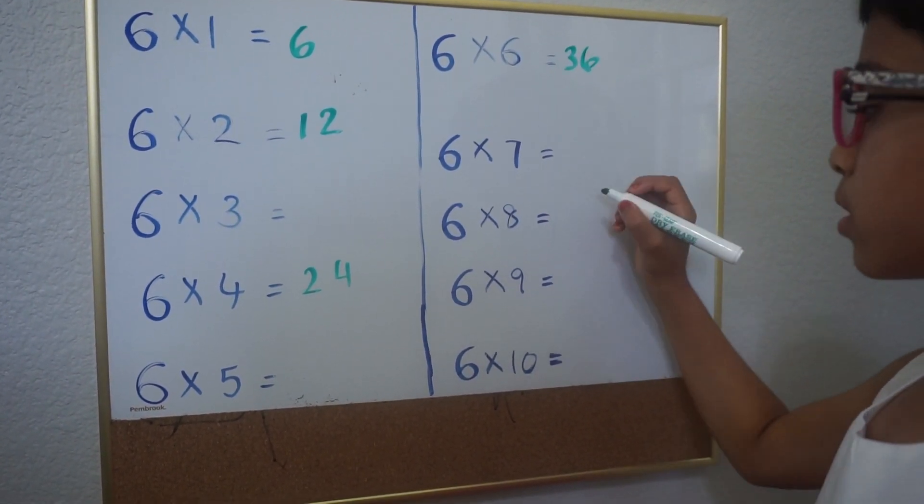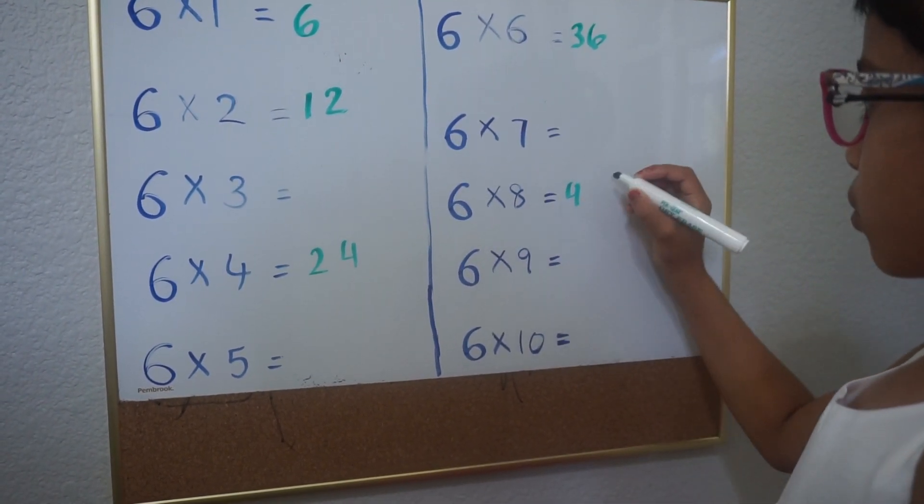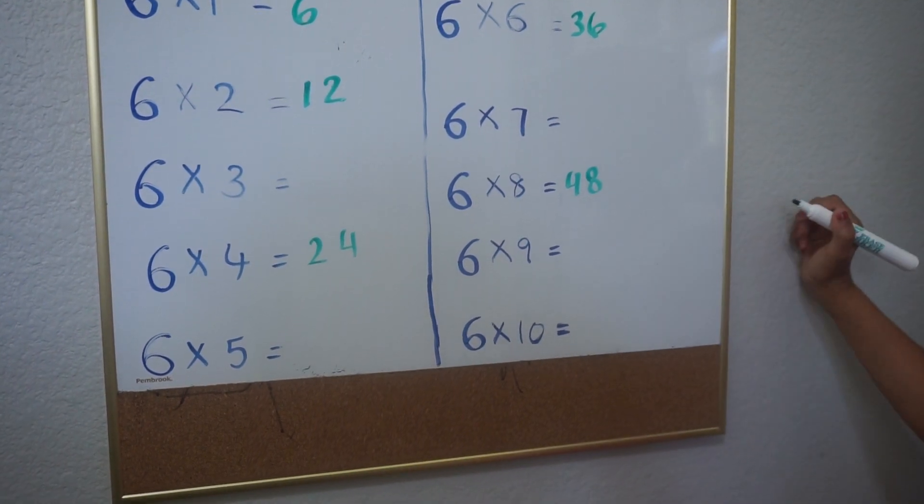Skip the 7 and go to 8. Half of 8 is 4, and then you borrow the 8 and put it over here. 48.